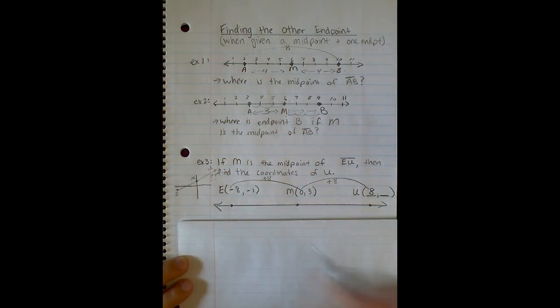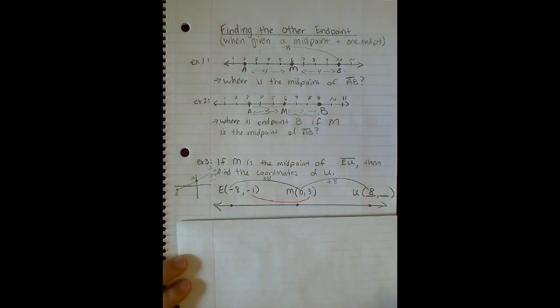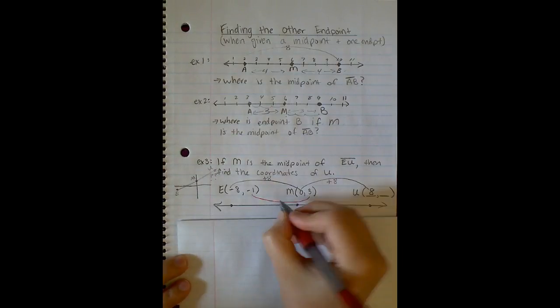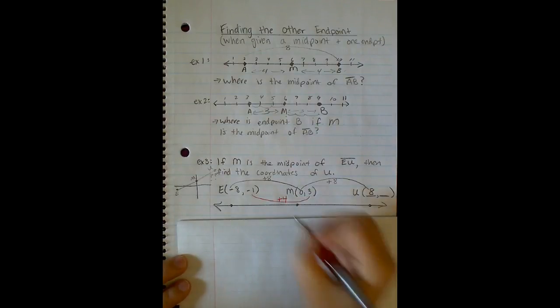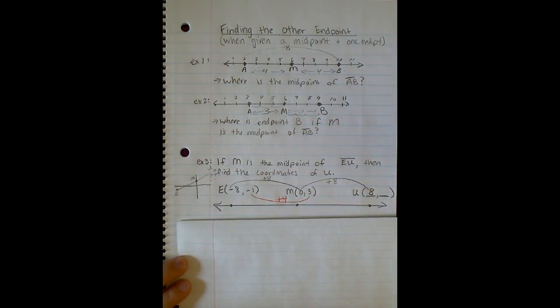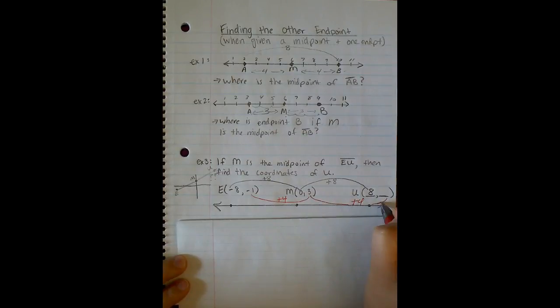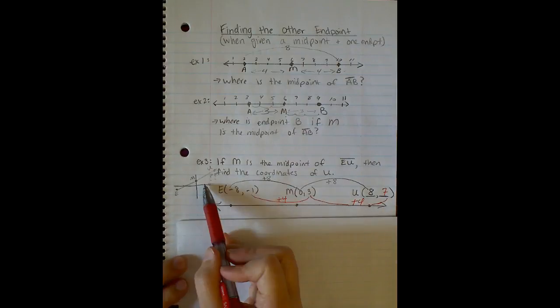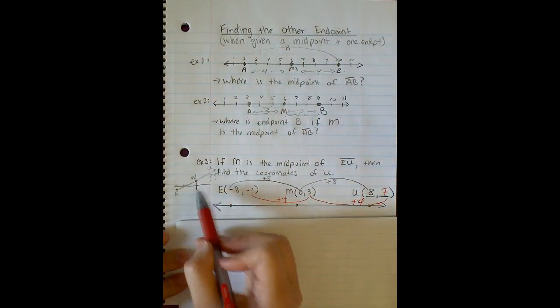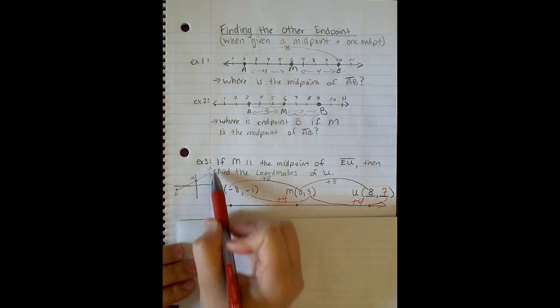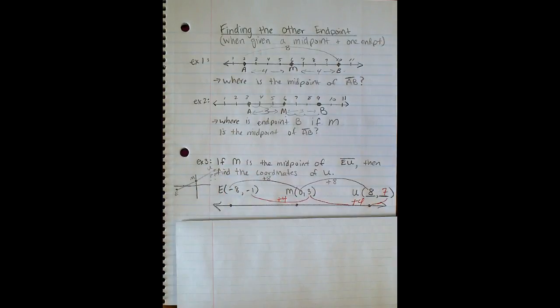I'm going to do the exact same thing for my Y coordinates. From negative 1 to positive 3, the difference is adding 4. So I'm going to follow that exact same pattern from my midpoint to my other endpoint. So 3 plus 4 gives me 7. So the coordinates of U should be 8, 7. And you can check by going back to your sketch. Does that make sense? If I were to graph the point 8, 7, it would be in this area. So that makes some sense.